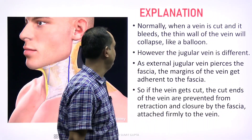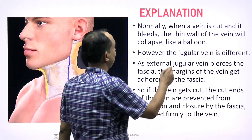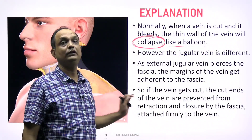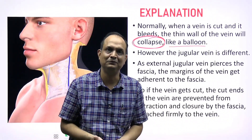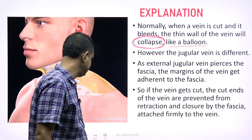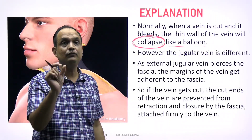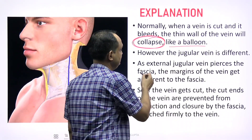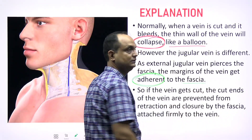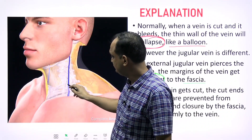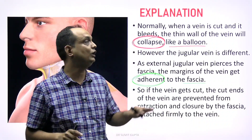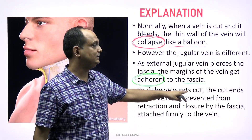Normally when a vein is cut and bleeds, the thin wall of the vein collapses like a balloon. But here the problem is that this vein does not collapse like a balloon. Why? Because where the external jugular vein pierces the deep fascia — and this is the most important keyword — the margins of the vein become adherent to the fascia.